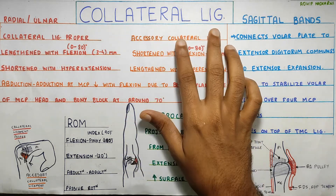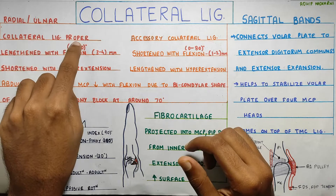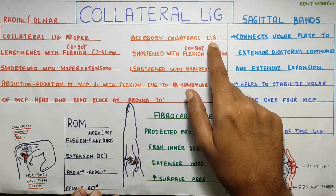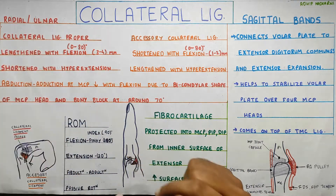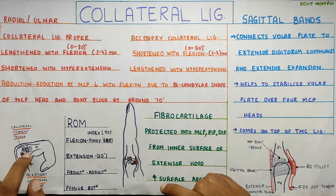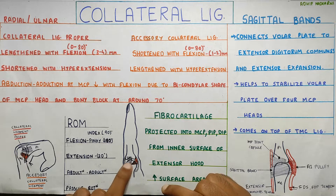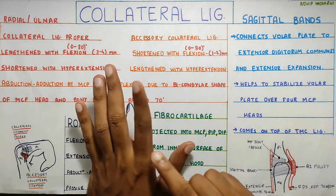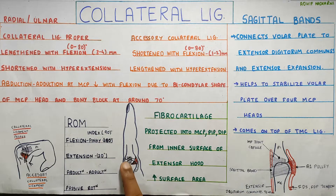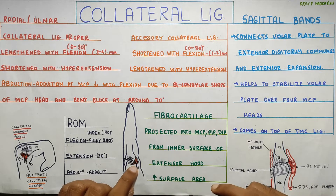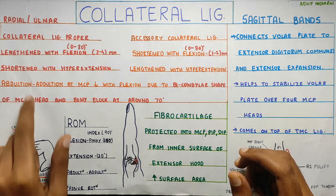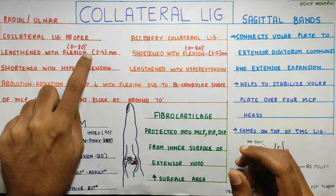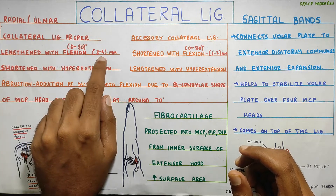The collateral ligament can be divided into two parts: the collateral ligament proper and the accessory collateral ligament. These ligaments, since they are collateral, are present on both sides — the radial and ulnar side. The collateral ligament proper gets lengthened with flexion of 0 to 80 degrees, and it gets lengthened by around 3 to 4 mm.